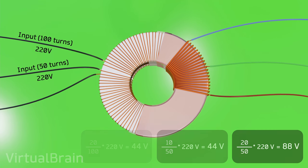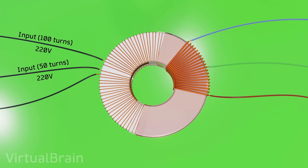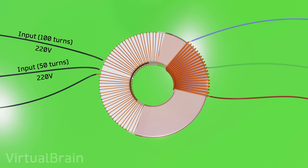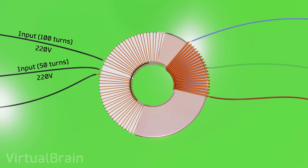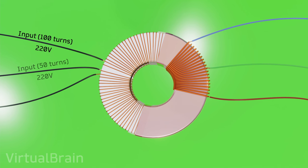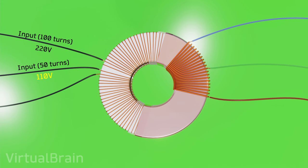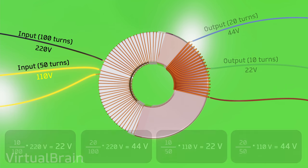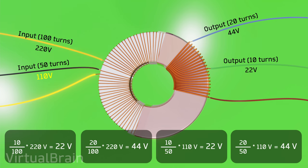But this is generally not the reason why multiple primary coils are often used. Its real utility is when we have a different input voltage. If we use this same transformer with an input voltage of 110 volts, we can use the primary coil with 50 turns and get exactly the same output voltages as with the 220 volts.